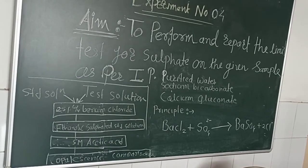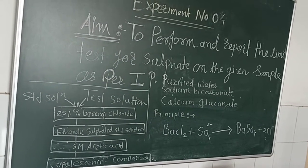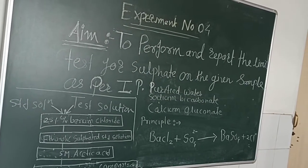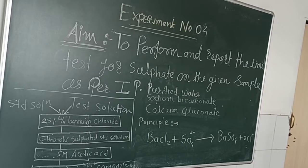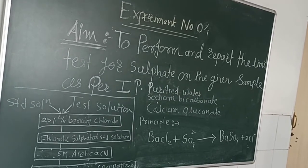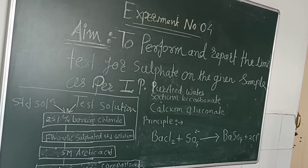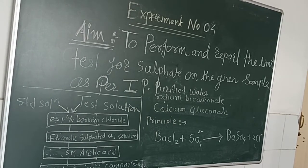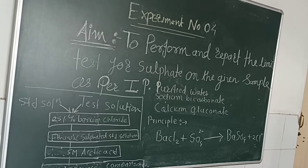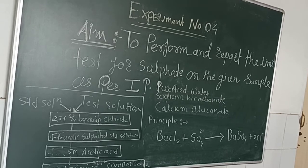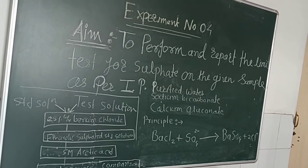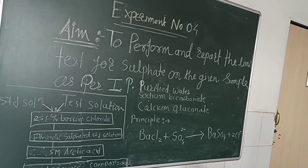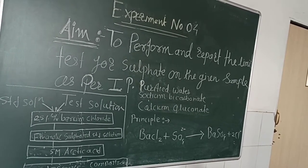For this experiment we require the same apparatus: a pair of Nessler cylinders, a wooden stand, glass rod, pipettes, and measuring cylinders. The chemicals required are sodium bicarbonate, calcium gluconate, purified water, alcohol, barium sulfate, ethanolic sulfate standard solution of 10 ppm SO4, 5 molar acetic acid, barium chloride, and 2 molar hydrochloric acid.